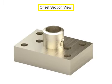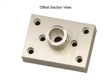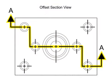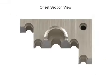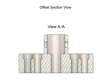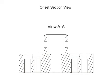An offset section results when the cutting plane line is bent to show internal features that are not in a straight line. The bends in the cutting plane are not shown in the section view. The new section view makes the internal features appear as if they are in a straight line. It's important to remember that they are not. The section view is created to illustrate the interior features of the part.